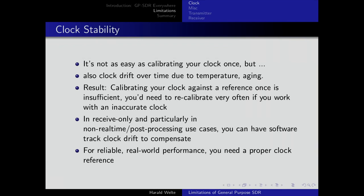The next point is clock stability. Calibrating the clock once is nice, but clocks drift due to temperature, aging, and other effects, so you would need to calibrate against a proper reference quite frequently. In receive-only use cases you can do this with some math and post-processing — you track the carrier clock and widen the window to follow the drift. That works because transmitters are required to be highly precise, so the receiver clock can drift while the transmitter is at a known fixed frequency. But as soon as you start to transmit, particularly in the cellular area, you need a high precision clock.